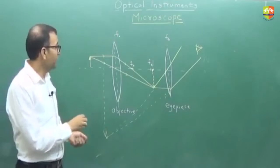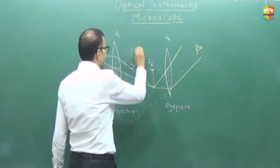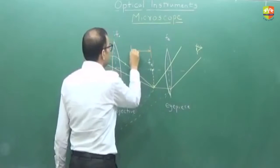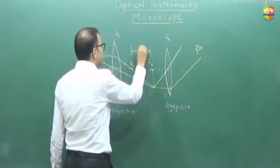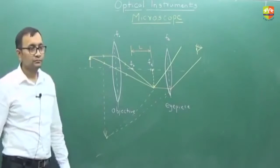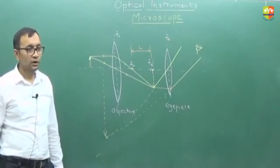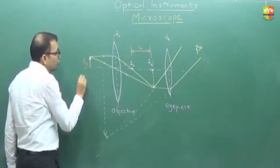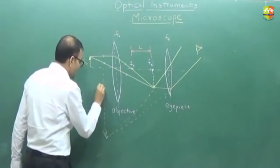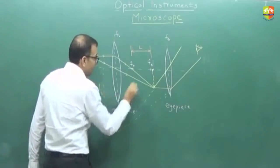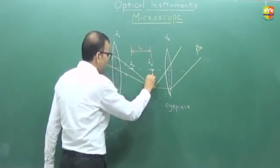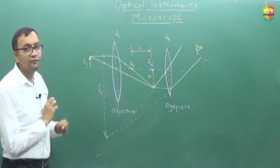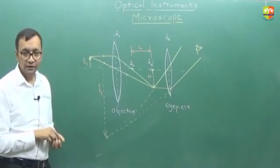One more thing usually given in compound microscope is the distance between the two focal points — let us call this L. Assume that this is HO and this height is HI, and this is the intermediate image height — let us say this is capital H. I need to find the total magnification.